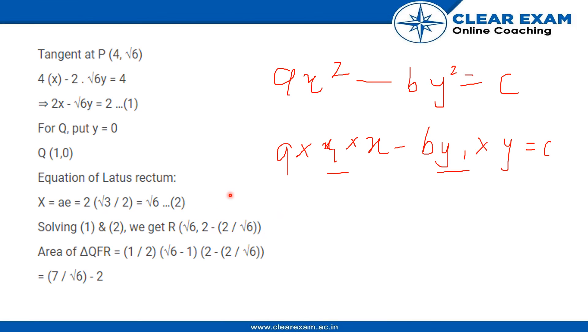Now the area of the triangle QFR is half into base into height, so we get this value over here which is √7/√6 - 2. Thank you.